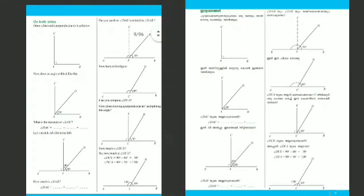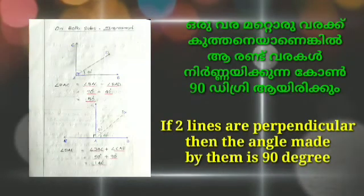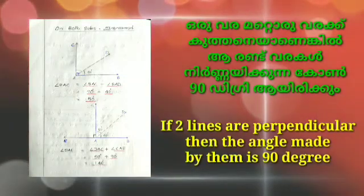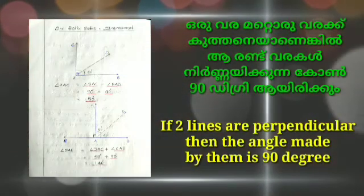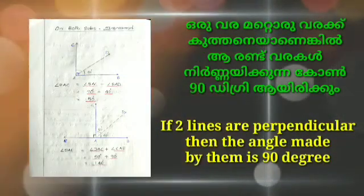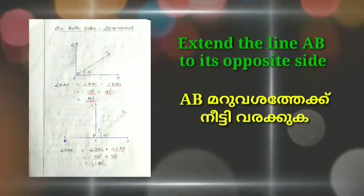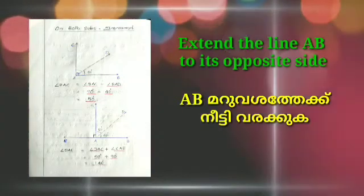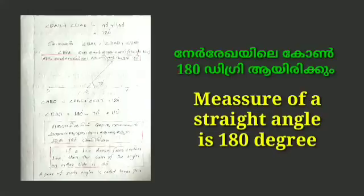BAD is 40 degrees. What will be DAC? For the angle on one side is 90 degrees. It is a 90-degree angle, and the other angle is 50 degrees.